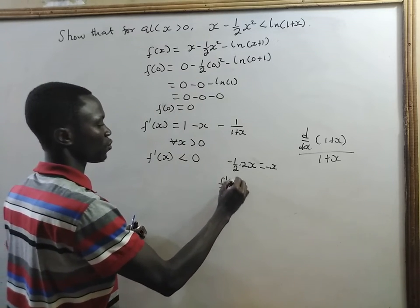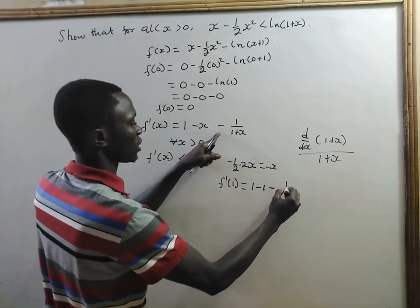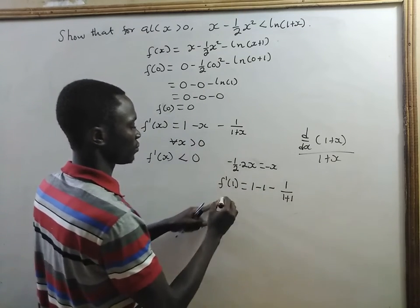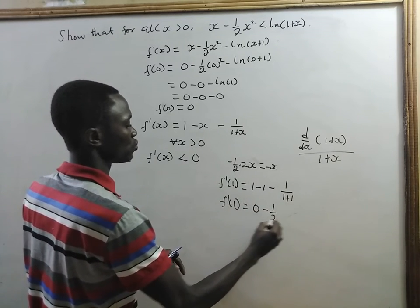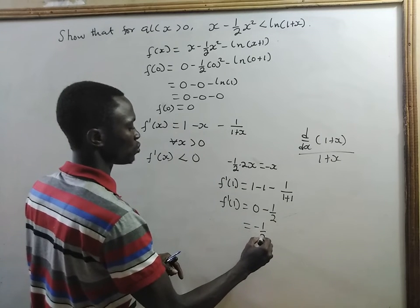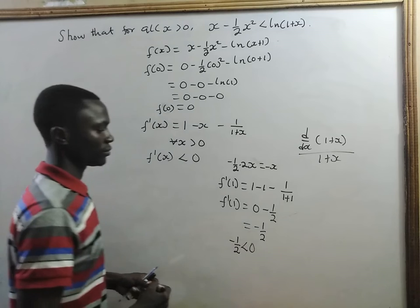If we take f'(1), you have 1 minus 1 minus 1 divided by 1 plus 1. That is, f'(1) would be 0 minus 1 over 2, which is negative 1 over 2, which is less than 0.